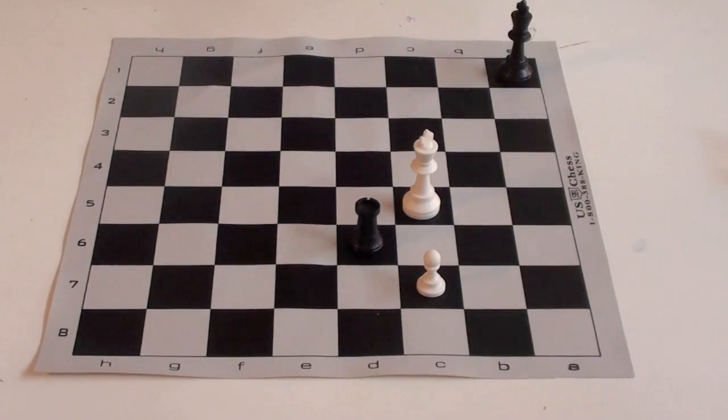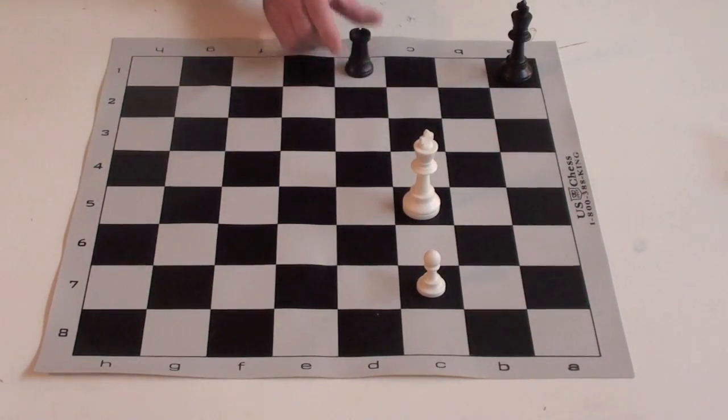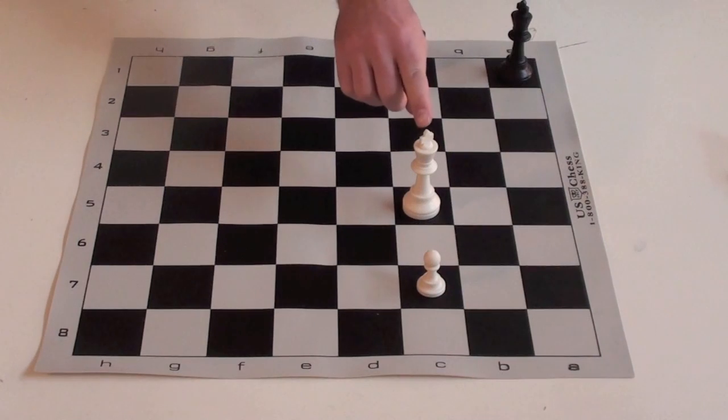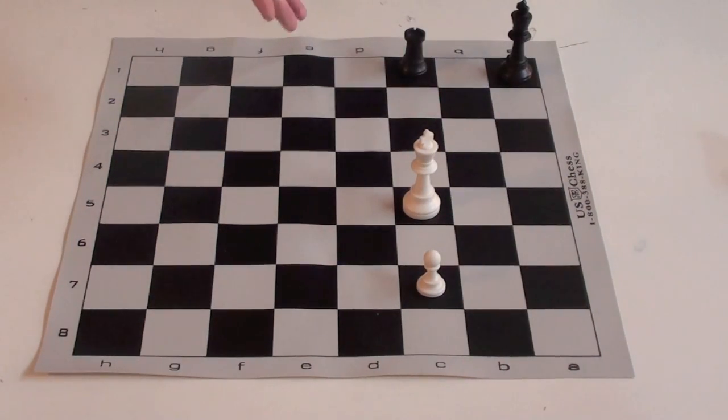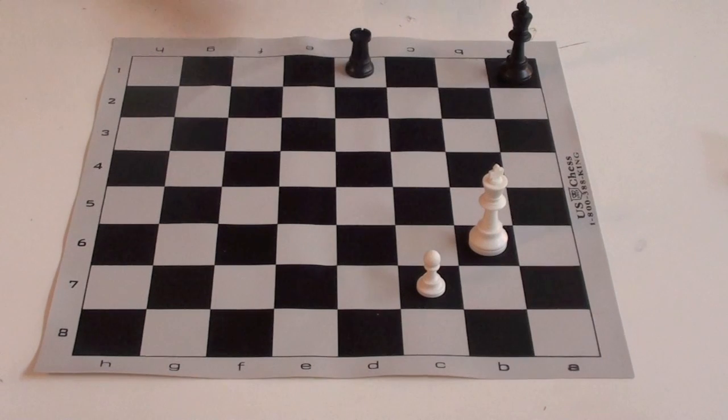If he comes over here to c5, the rook is just going to come down here to d1, planning for a skewer. This plan is to come over here to c1 and pin the king to the pawn and then take the pawn. And of course, if the king moves, he's still going to end up taking the pawn for the draw.